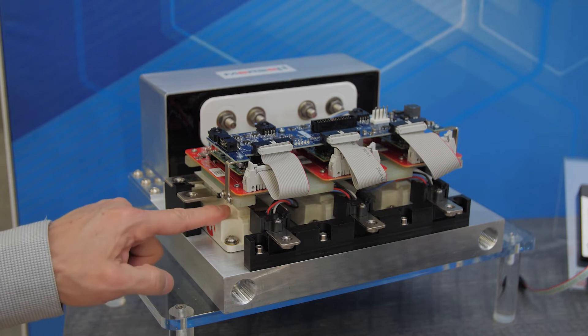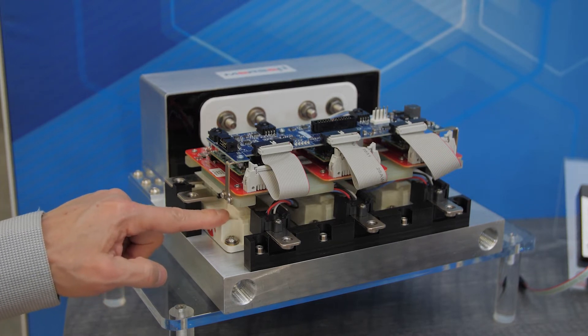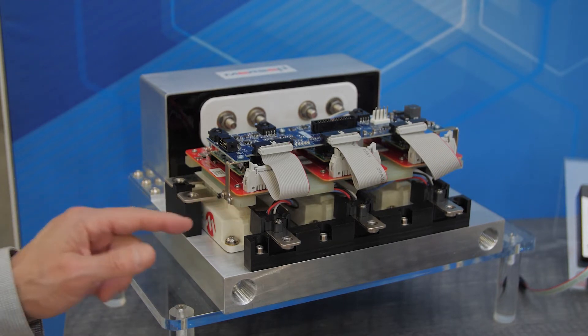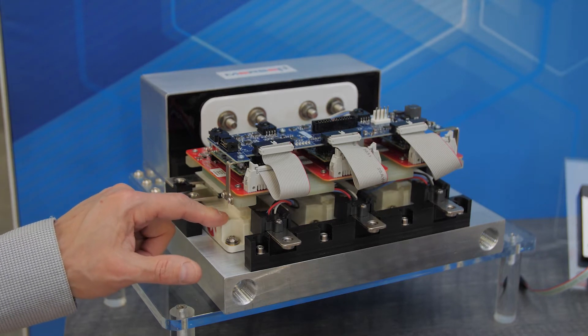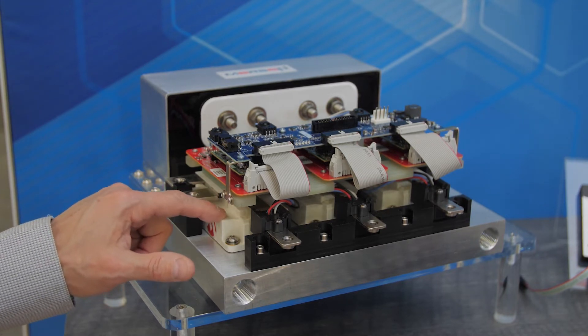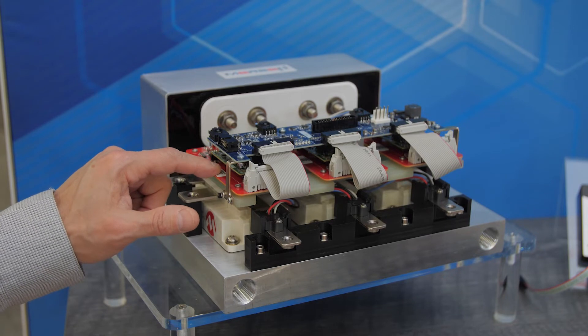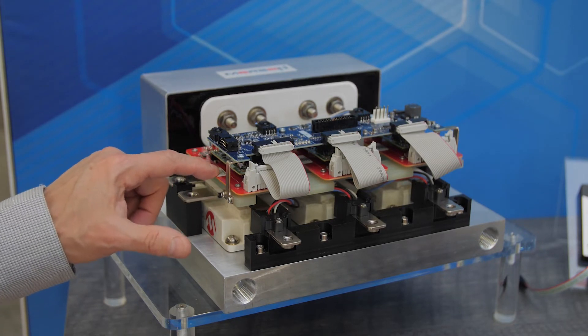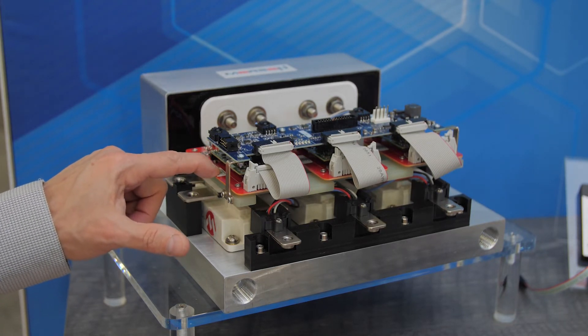What Microchip does are the MOSFET switches. These are our D3 package. They're very low profile, very low inductance and high current modules. These are 1200 volt modules. And then our gate drivers are integrated and tightly coupled with the MOSFETs themselves.